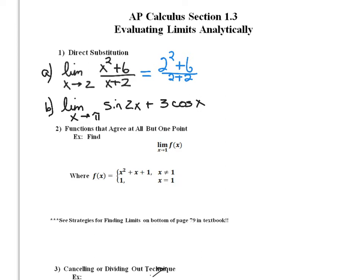Just doing the calculations here, I'm getting 10 over 4, and I can reduce that to 5 halves. So what that tells me graphically is that as my x coordinate is approaching 2 on the x-axis, my y — or my function value — is approaching 5 halves. This would be a point on my graph: 2 comma 5 halves. So I'm really just finding the y coordinate for that x value.